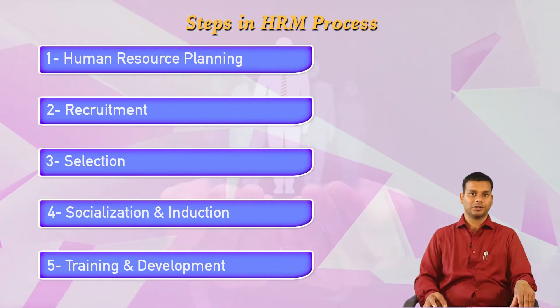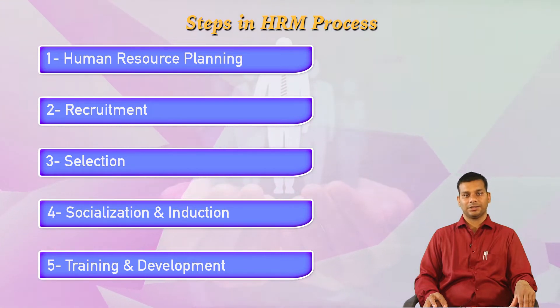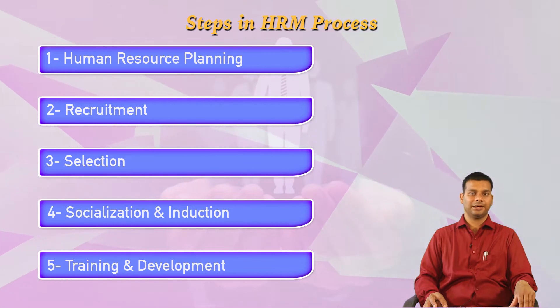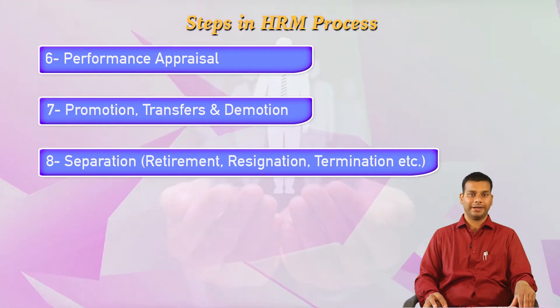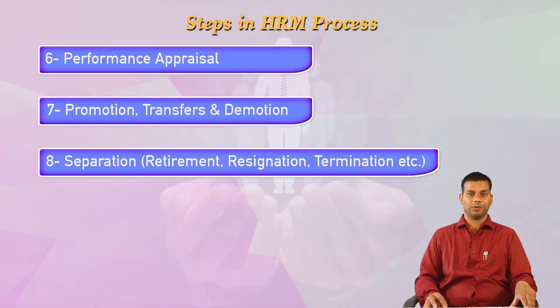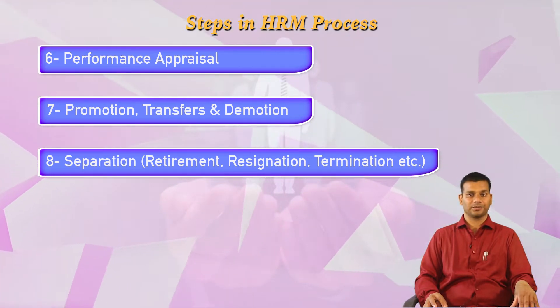The steps in the HRM process are: first, human resource planning; then recruitment; then selection; then socialization and induction; then training and development; then performance appraisal; then promotions, transfers, and demotion; and finally separation. Separation can be on account of retirement, resignation, or termination. These are the steps in the human resource management process.